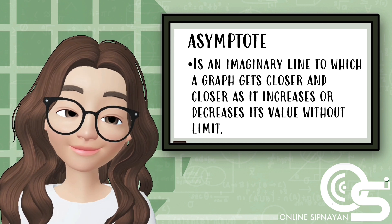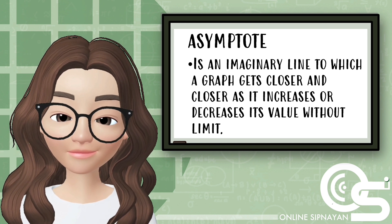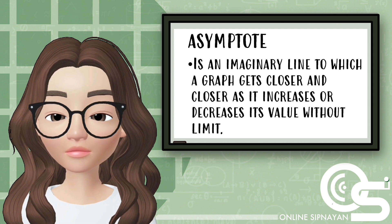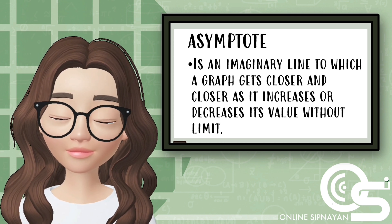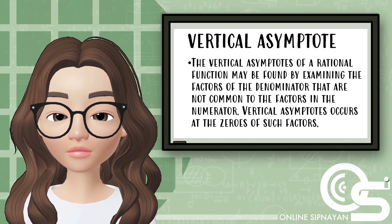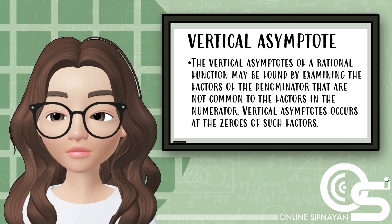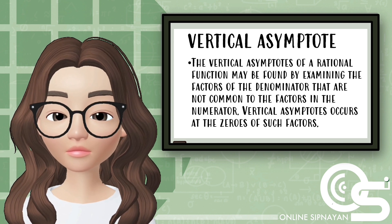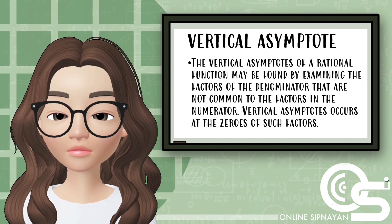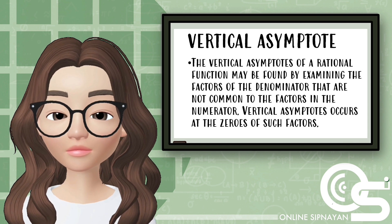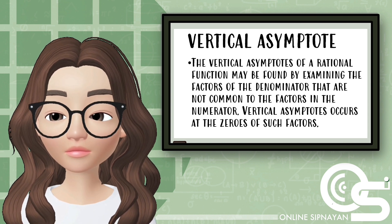An asymptote is an imaginary line to which the graph gets closer and closer as it increases or decreases its value without limit. Next, we have vertical asymptotes. The vertical asymptotes of a rational function may be found by examining the factors of the denominator that are not common to the factors in the numerator. Vertical asymptotes occur at zeros of such factors.